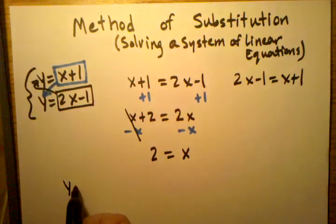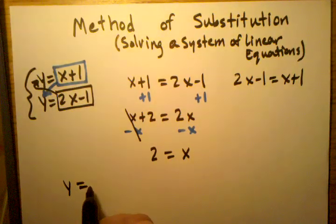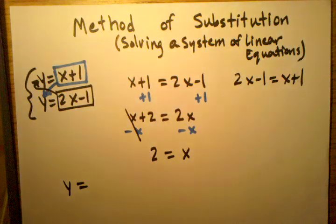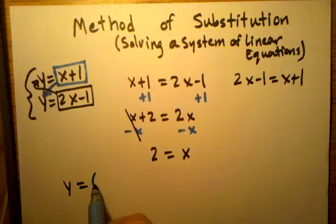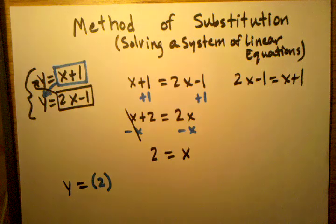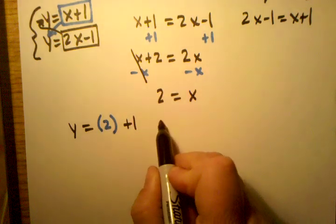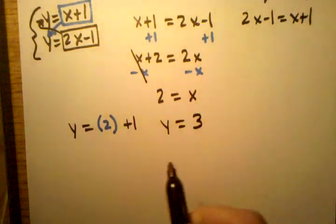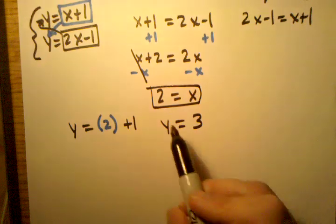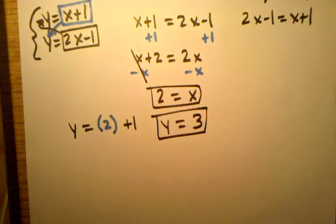So I'm going to go y equals, now instead of saying x for x plus 1, I'm now going to say, I know that x is 2, so I'll put a 2 in there for x. So now I have y equals 2 plus 1. Well, I know that means y equals 3. So here I found out that x equals 2, and here I found out that y equals 3.